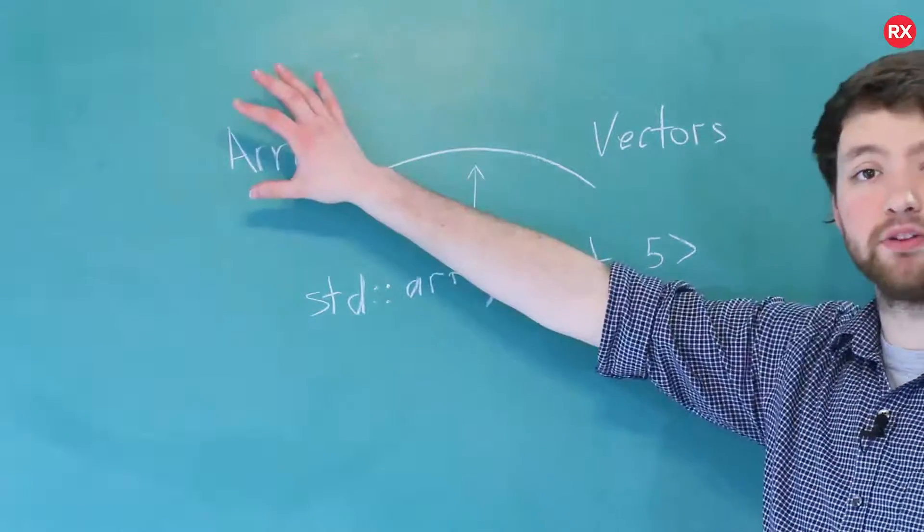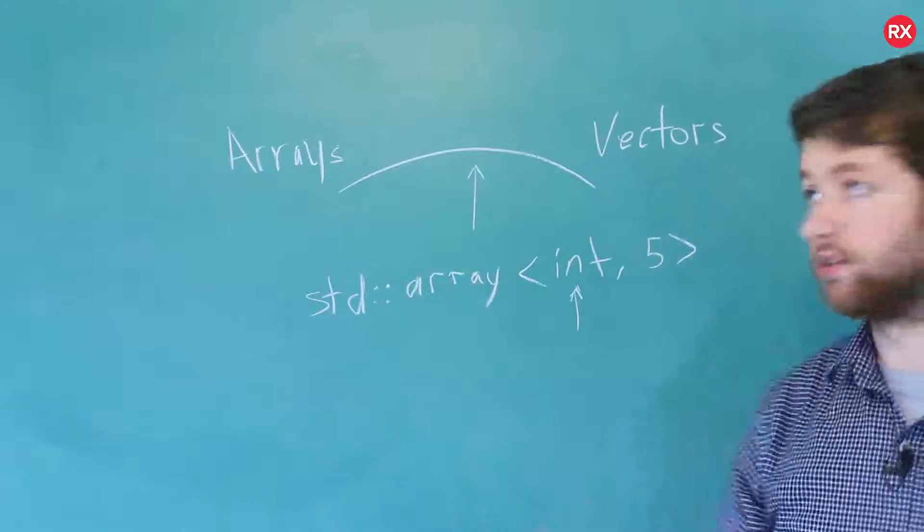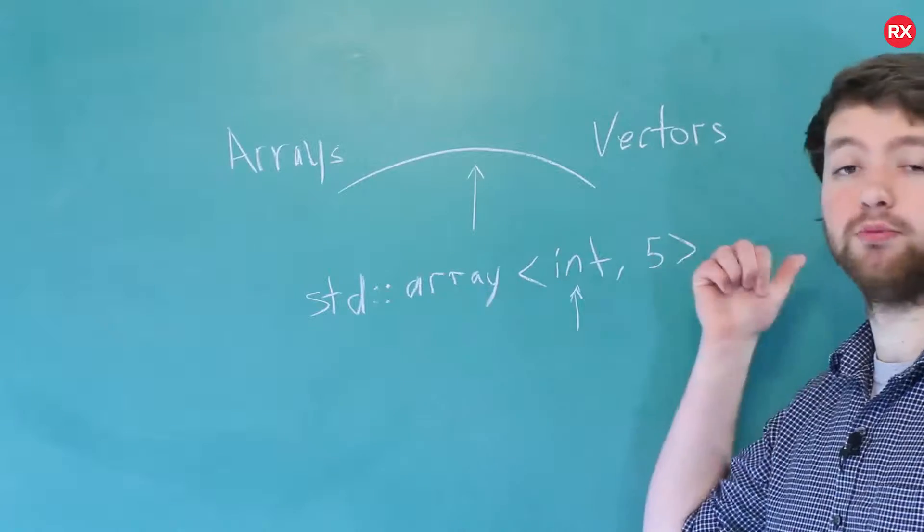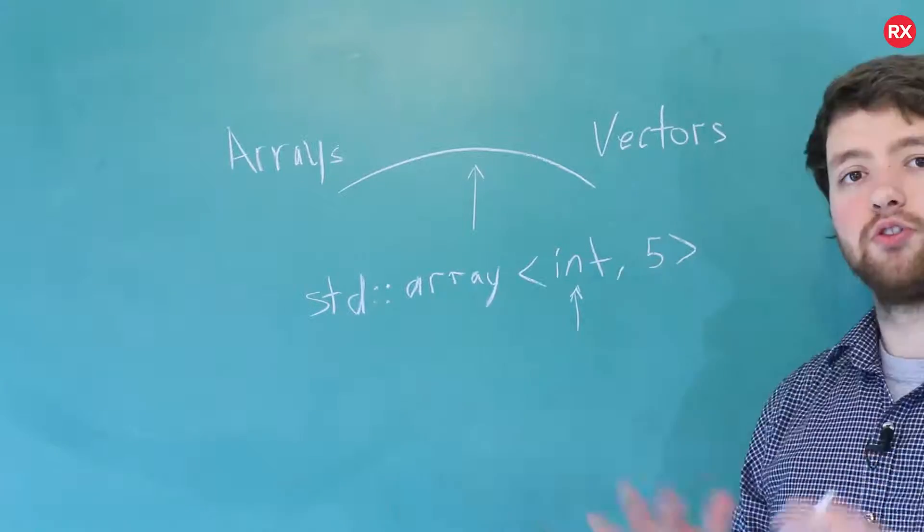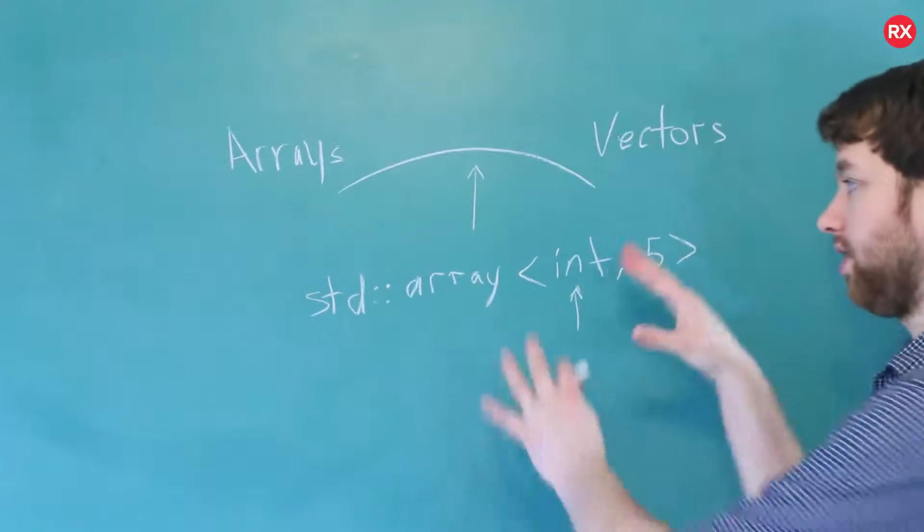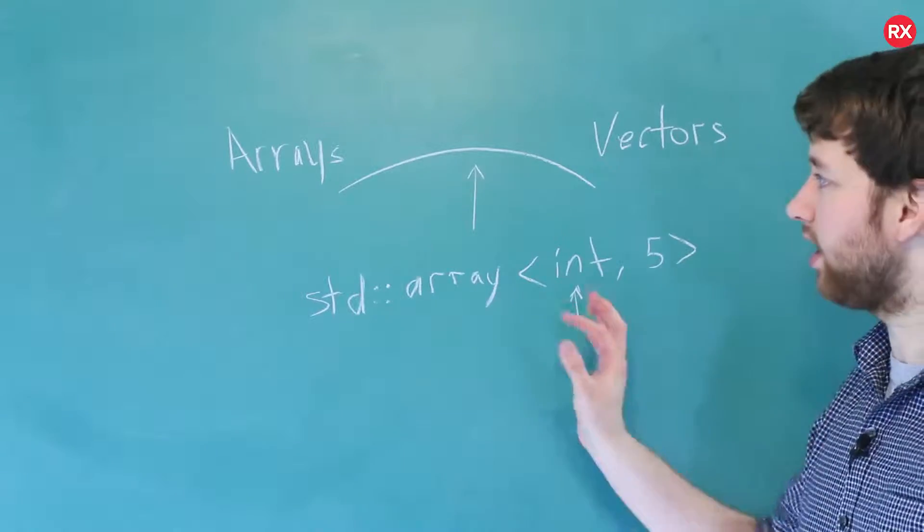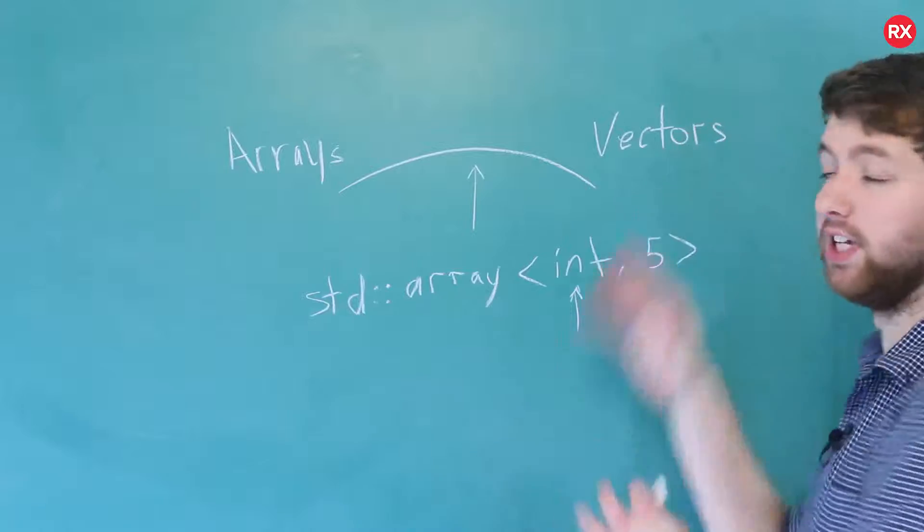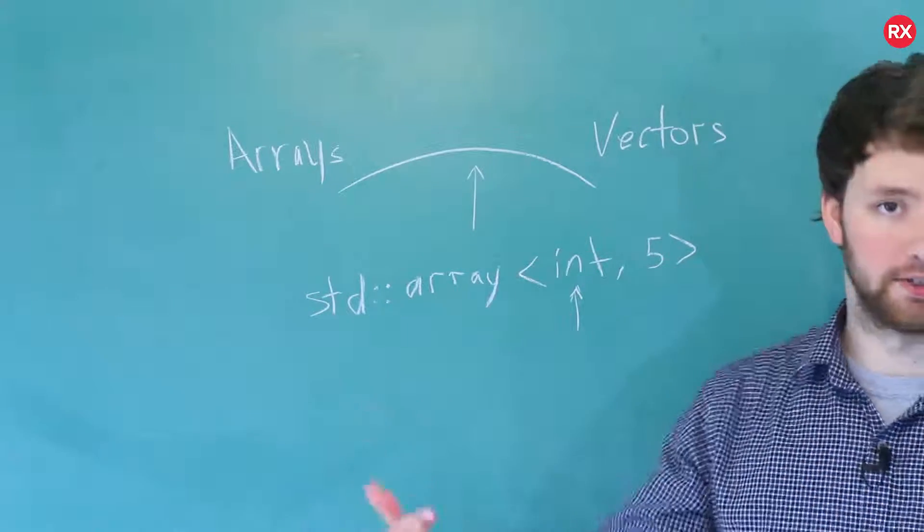Last thing is that when arrays are passed to functions they're passed as pointers. Vectors are passed by value meaning they're copied. Templatized arrays are similar to vectors in that they are copied. So hopefully that helps you see that the templatized array is somewhere in the middle. It kind of acts like an array but with some of the capabilities of a vector. Specifically it knows its size and it is passed by value.